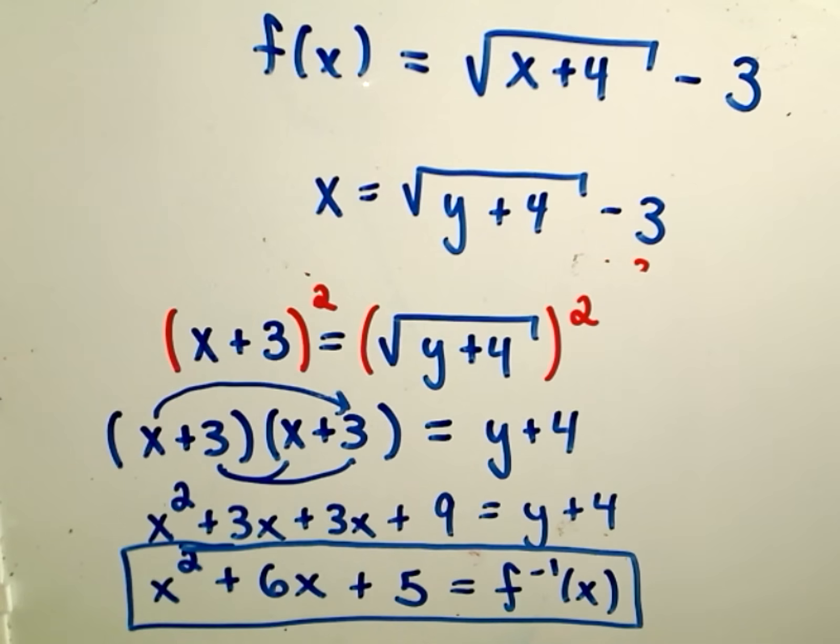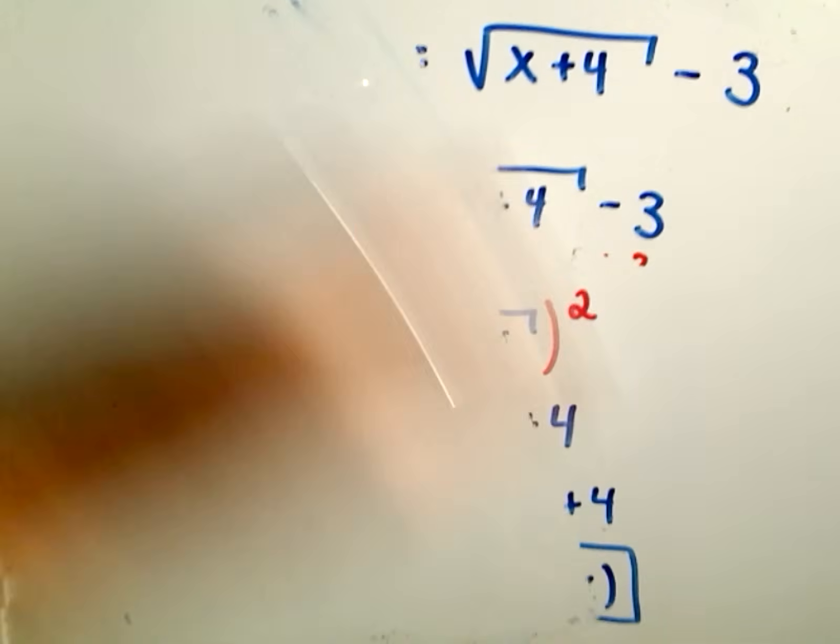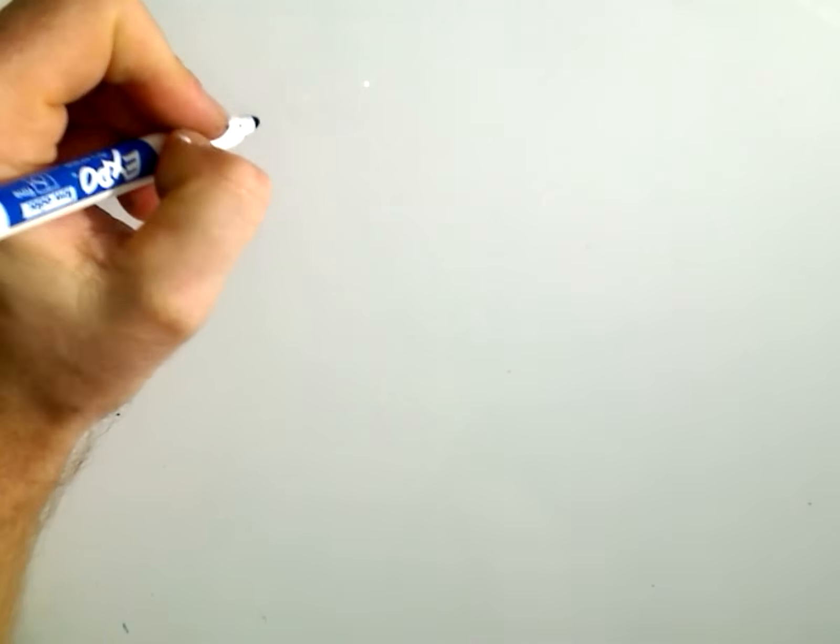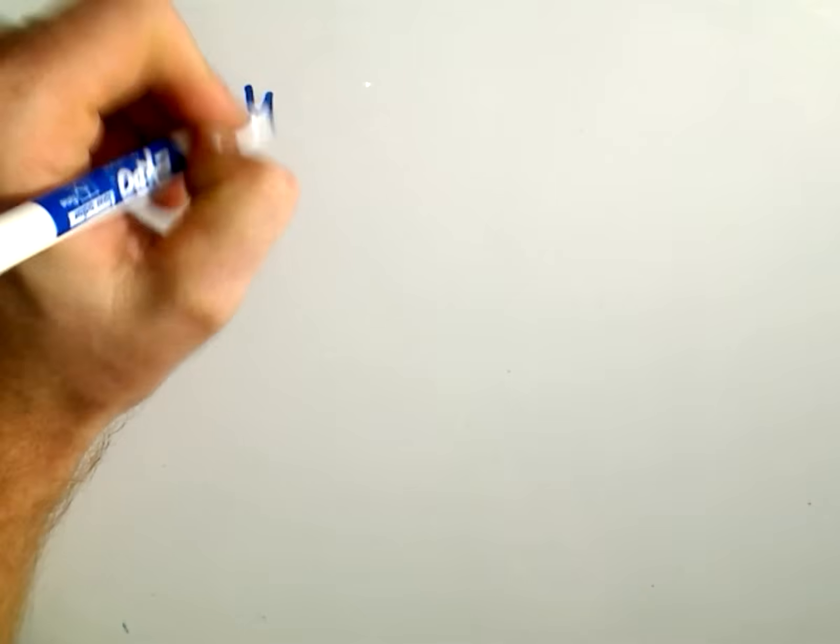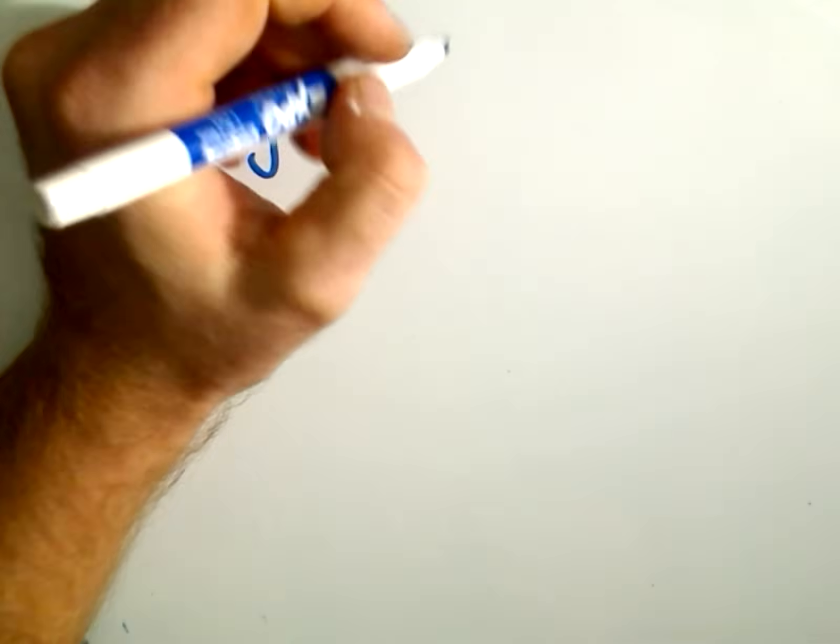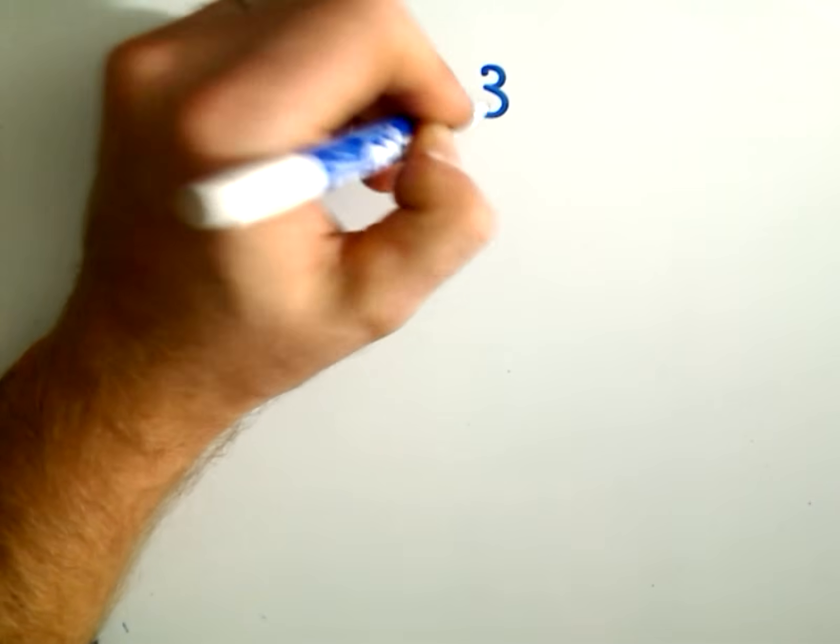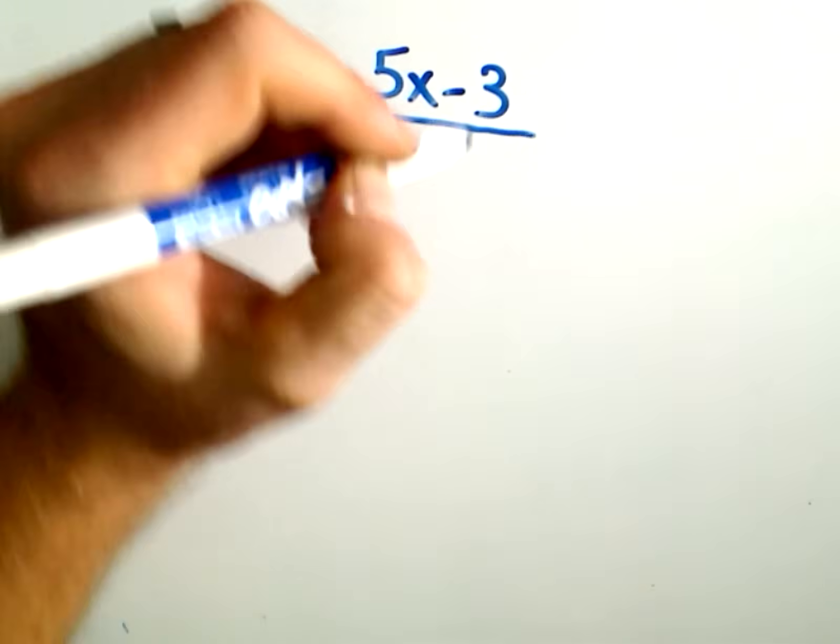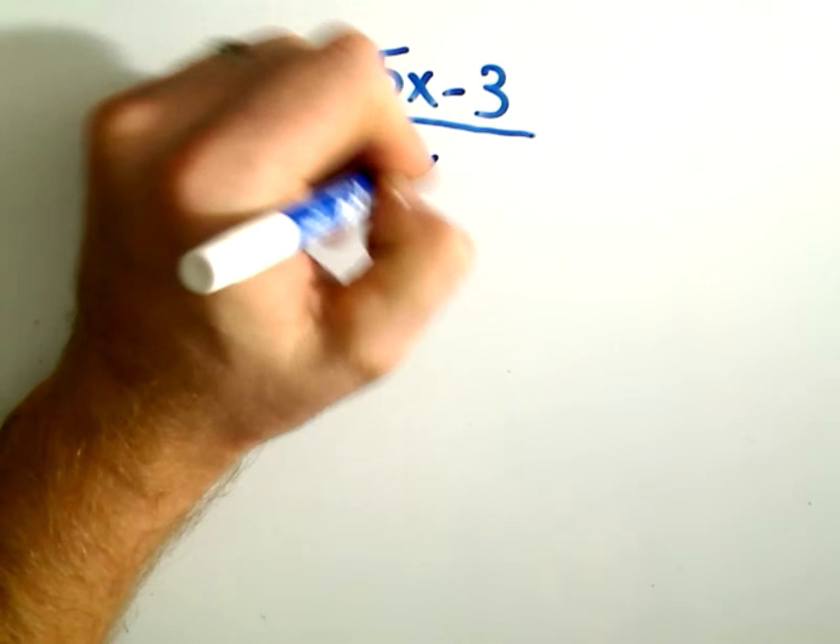So let's do one other example here of finding the inverse. Again, it's mainly just remembering to switch x's and y's and then just a little bit of tedious algebra.